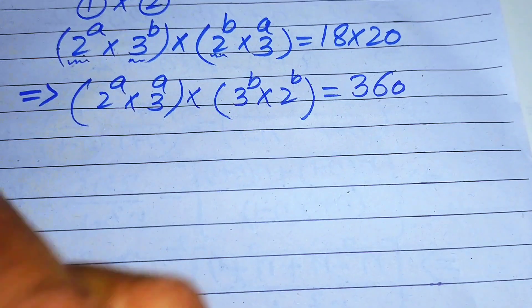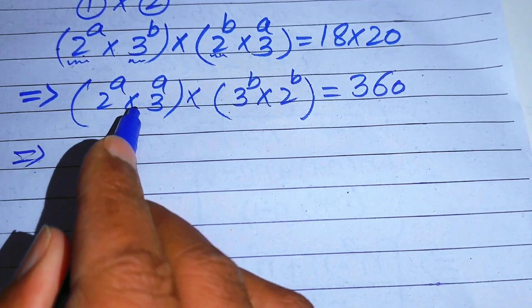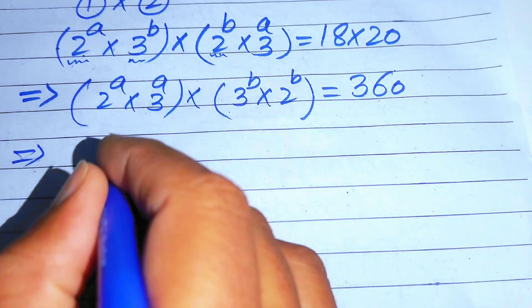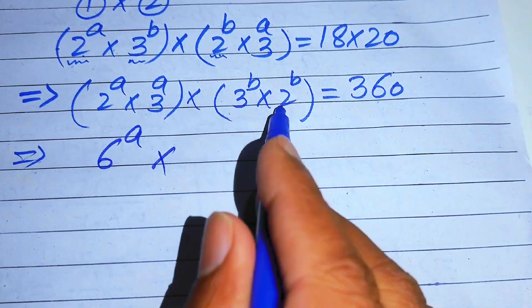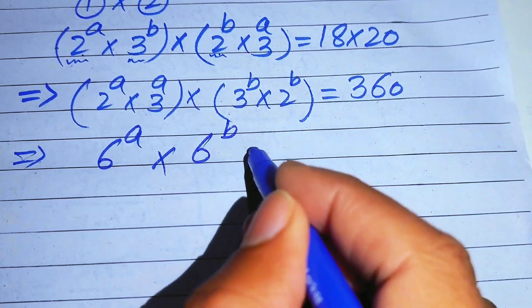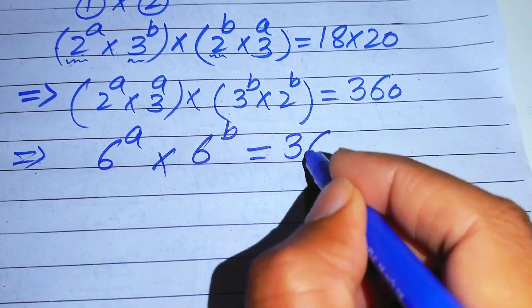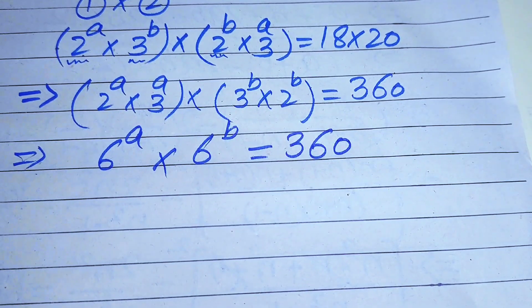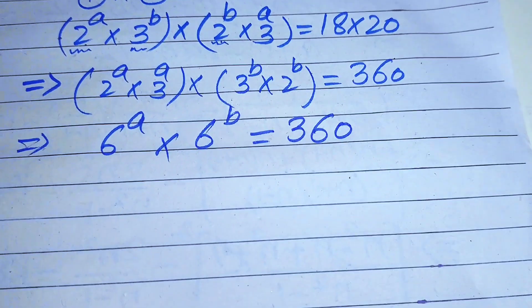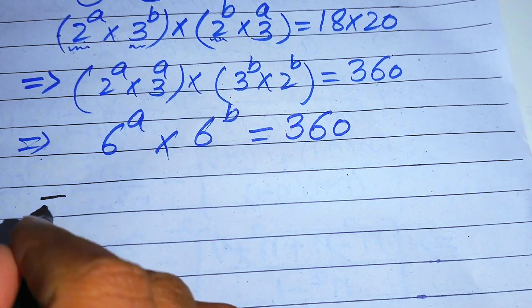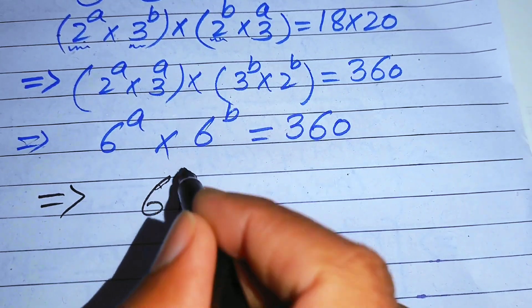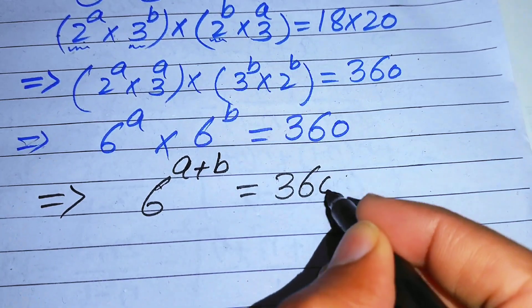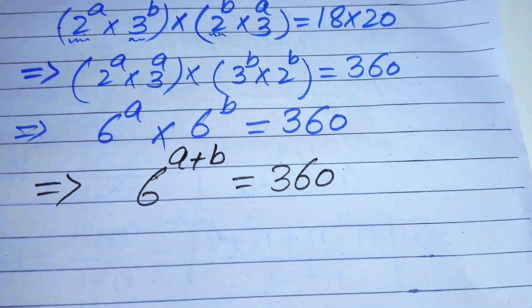Since the exponents are the same, we combine the bases and write the expression as 6 to the power of a multiplied by 6 to the power of b equals 360. The bases are the same, so we add the exponents and get 6 to the power of a plus b equals 360.